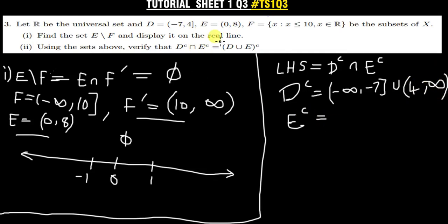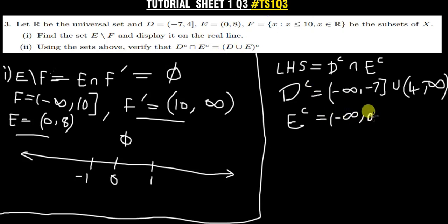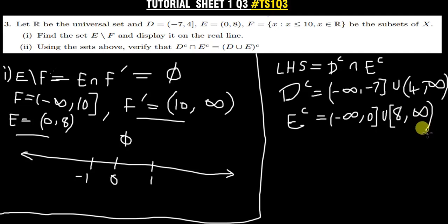Now we find E complement. E is [0, 8], so E complement goes from negative infinity up to zero, and then from eight to positive infinity. So E complement = (−∞, 0) ∪ (8, +∞).